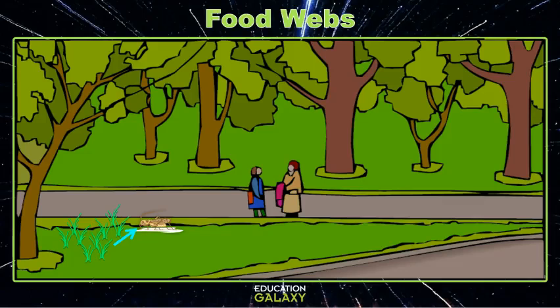Now let's find a bird that eats a cricket. A finch is also a consumer since he has to eat crickets to get energy. Now what we've made is a food chain.